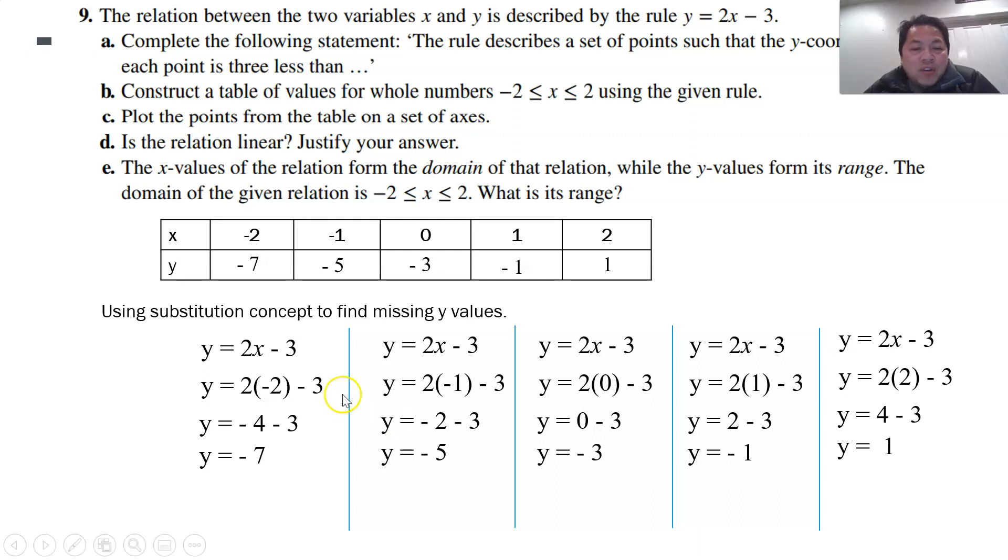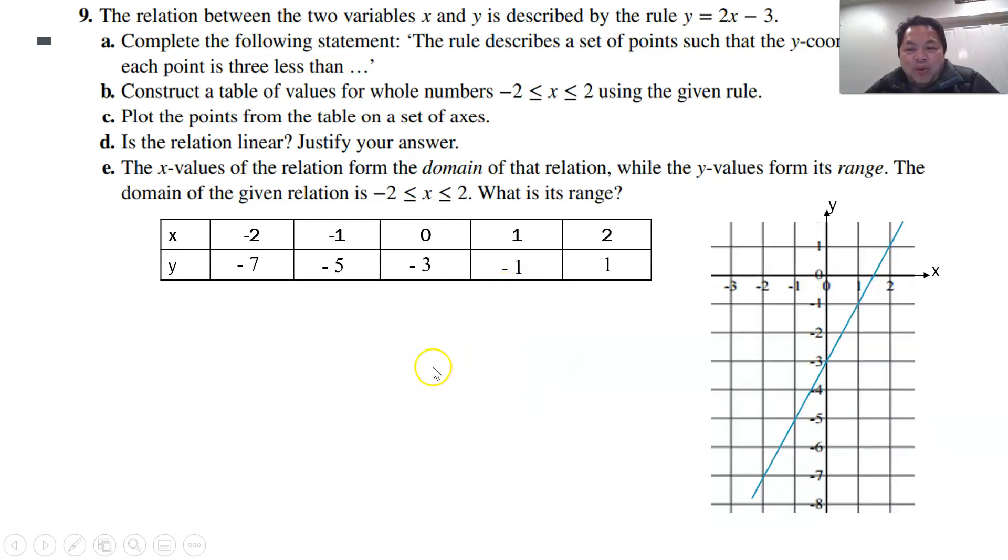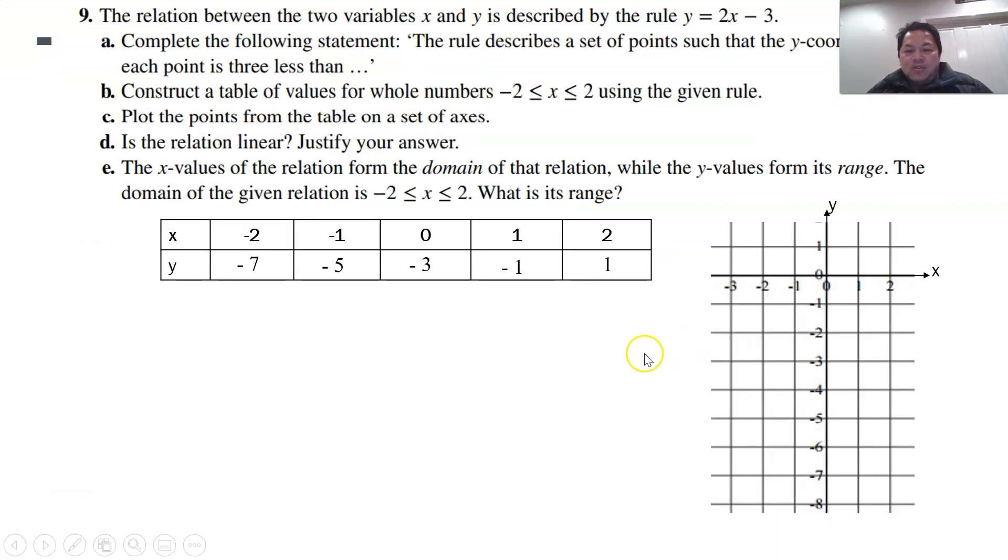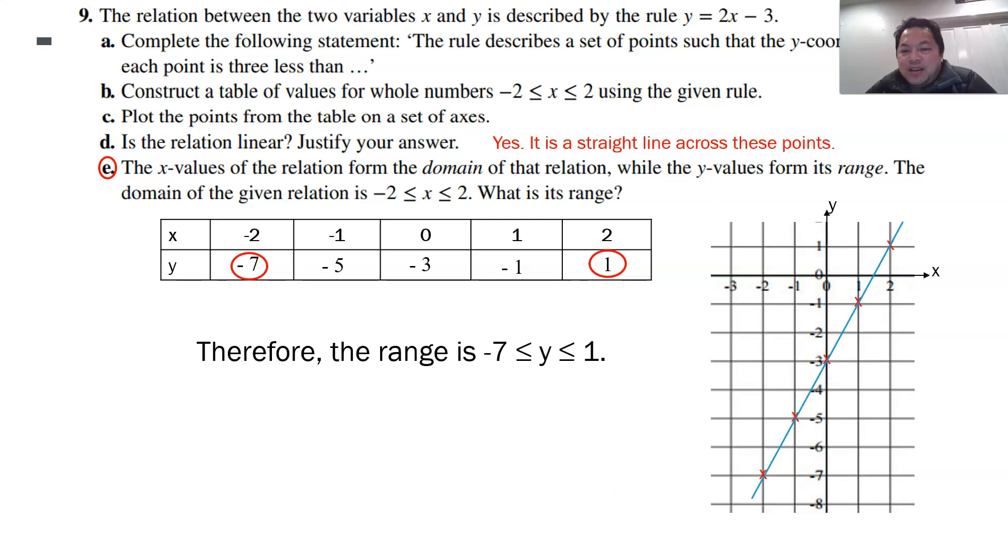Good news! So once we have all this information, we are able to plot the graph, isn't it? So this is the graph that we are going to plot. The line is not meant to be there first. Let me come back here again. So with all the points given, minus 2 and minus 7 is here, so I plot the point. Then minus 1 and minus 5, that's the point. 0, minus 3 is there. 1, minus 1 is there. And then 2, minus 1 is there. And I could actually draw a line, isn't it? It's a straight line.